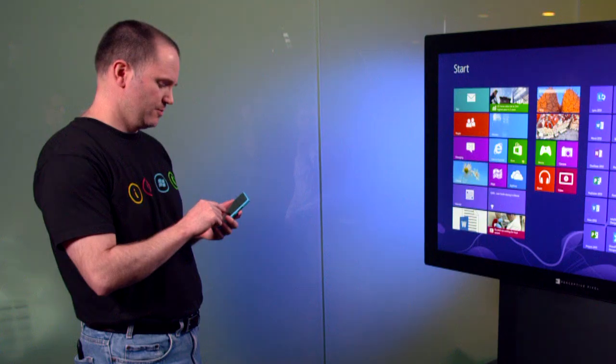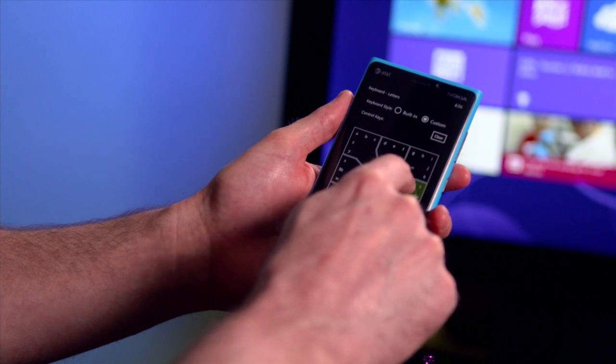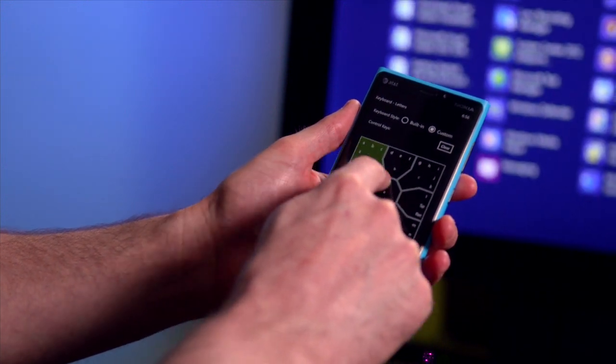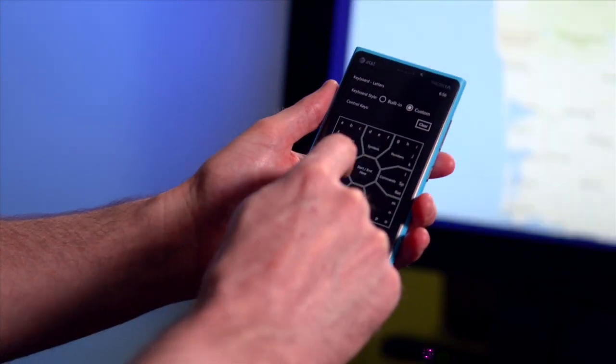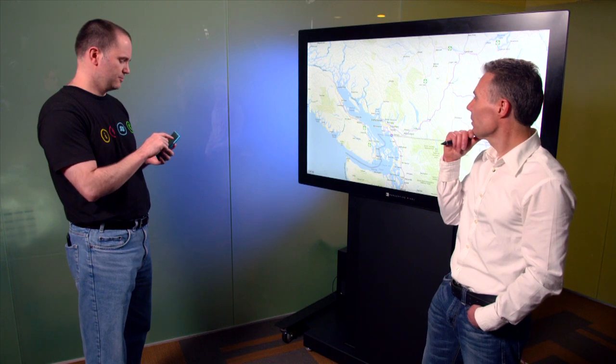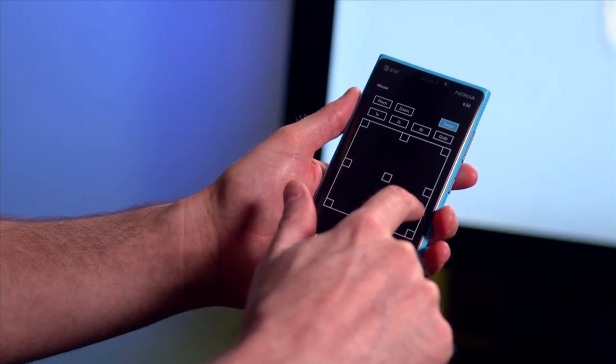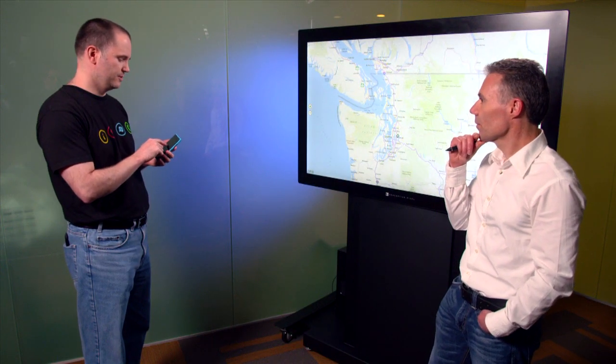We're going to launch the Maps application by typing M-A-P, and then we're going to go over to the mouse control and just move the screen around. You can see I'm controlling the machine.